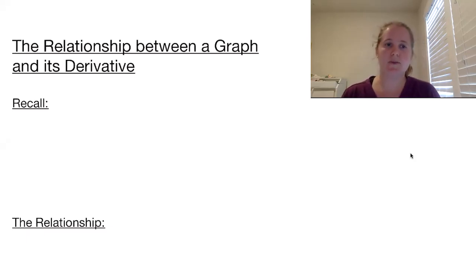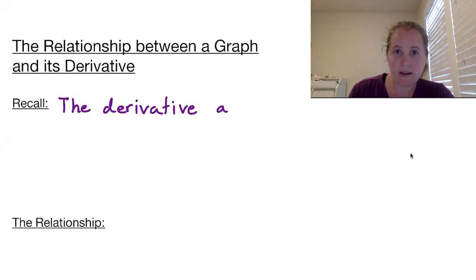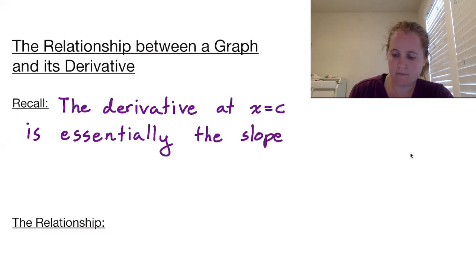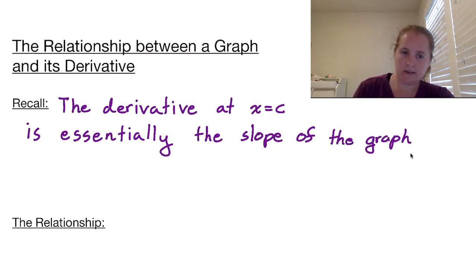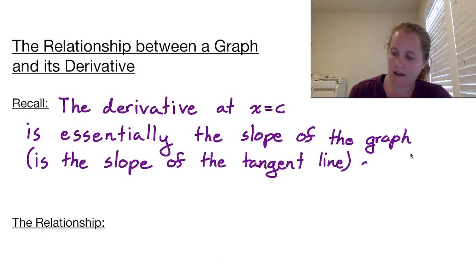Welcome to the relationship between a graph and its derivative. Recall that the derivative at x equals c is essentially the slope of the graph, or the slope of the tangent line, at x equals c.